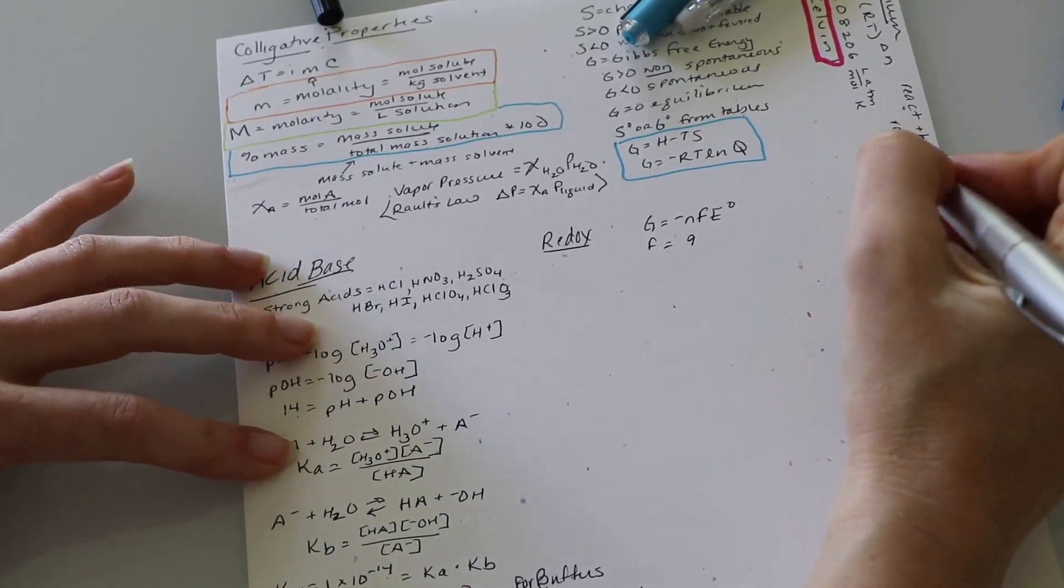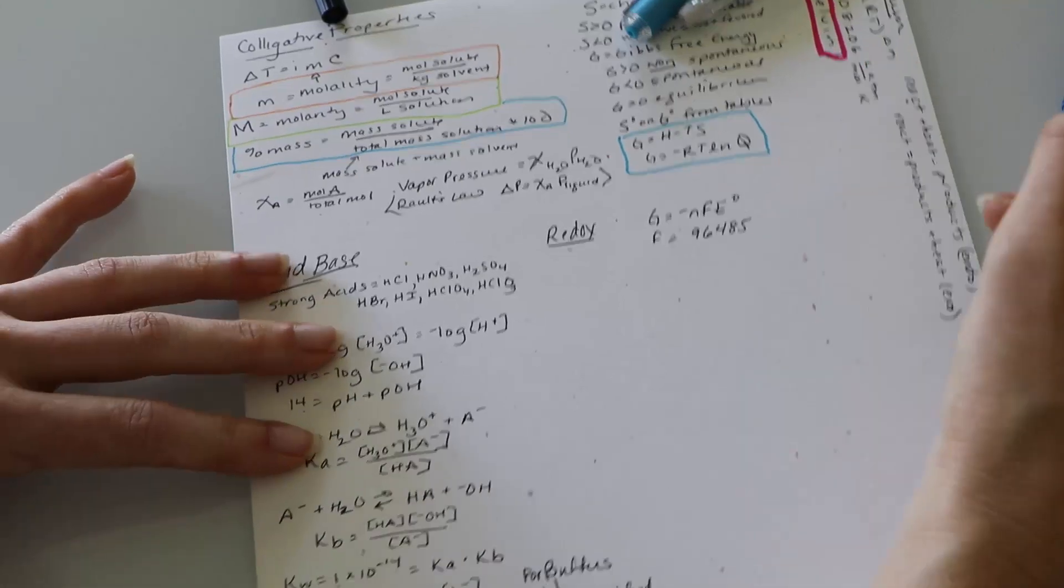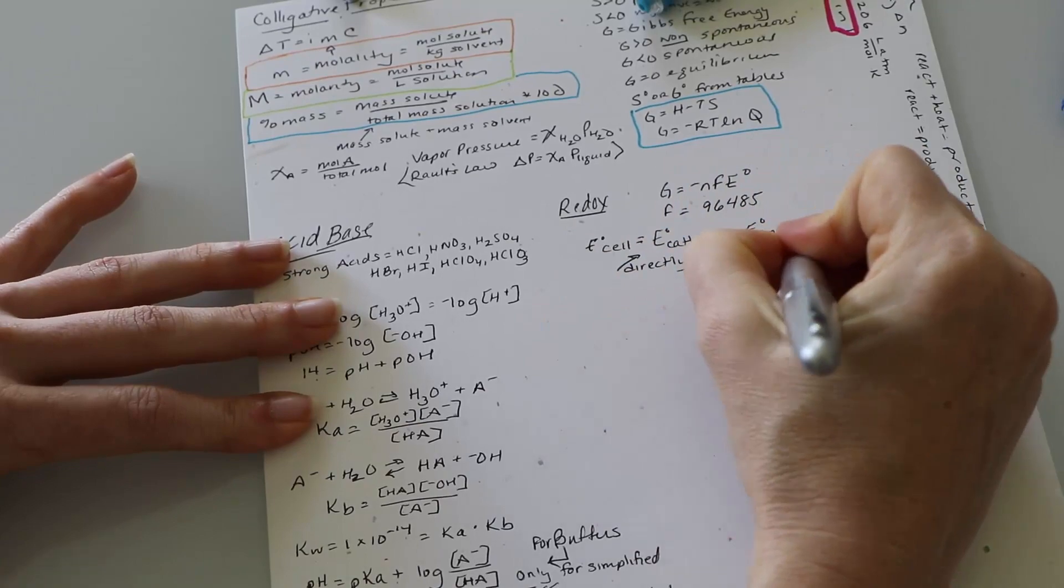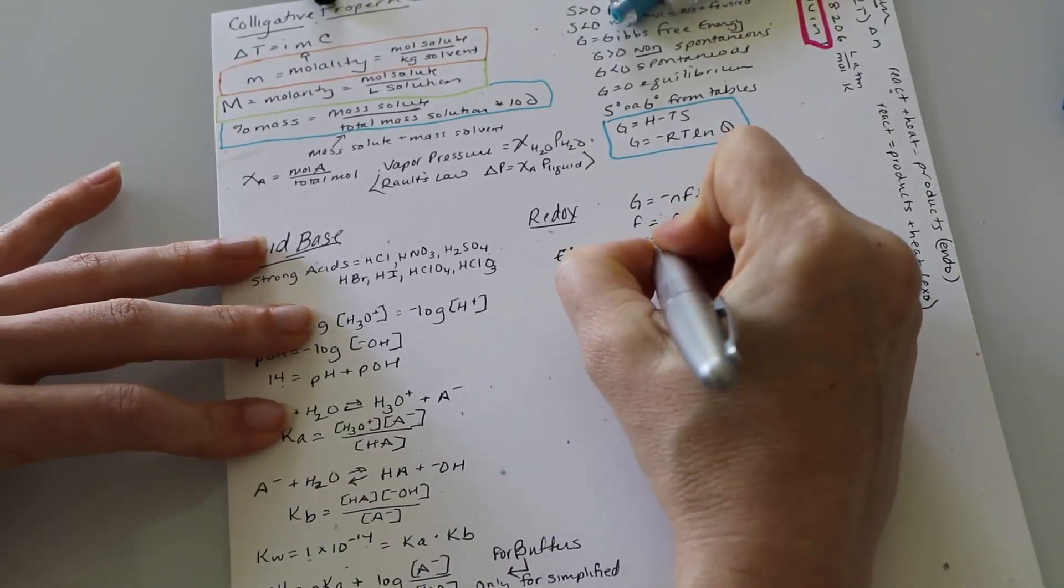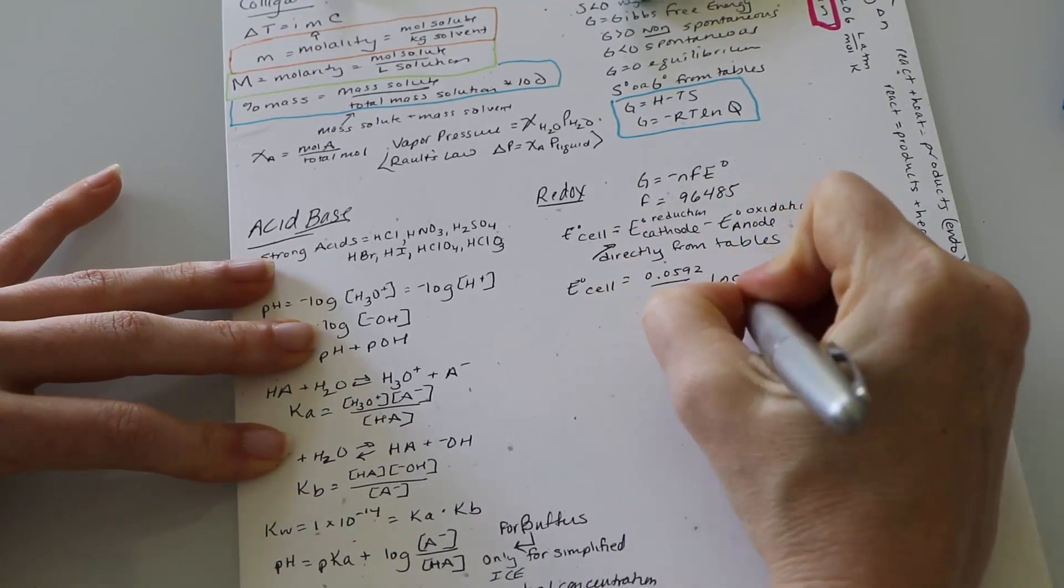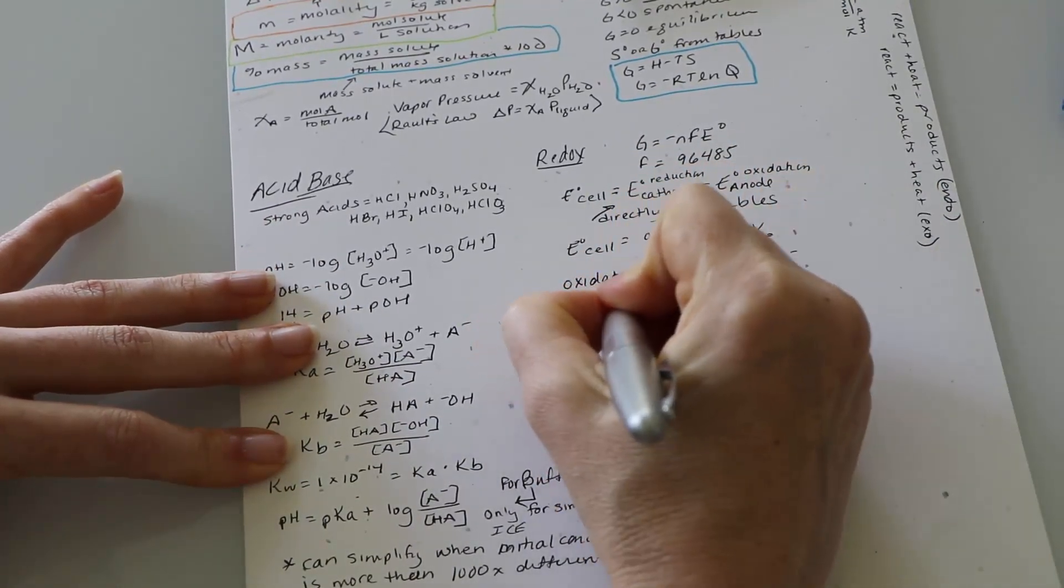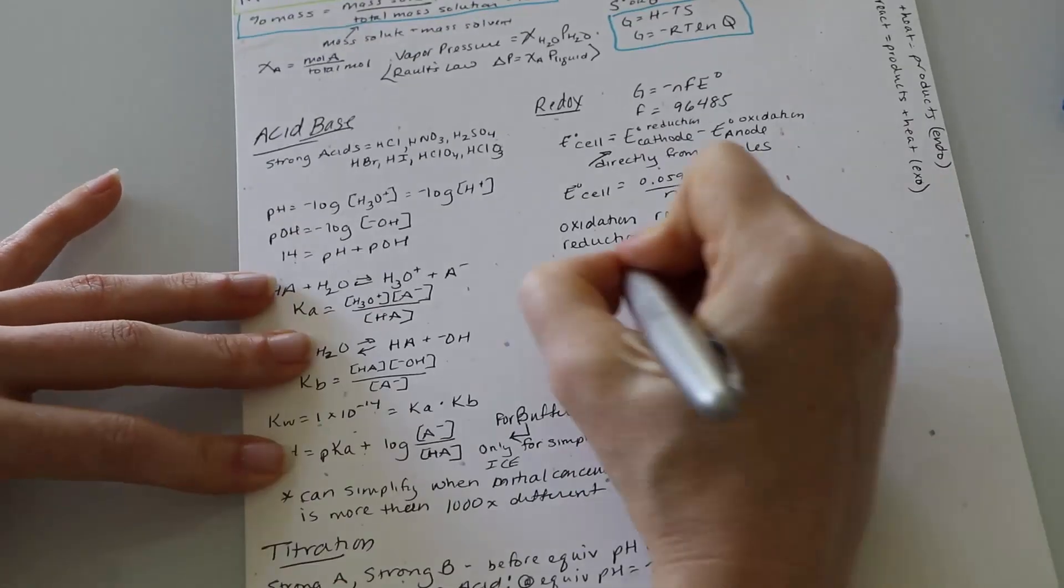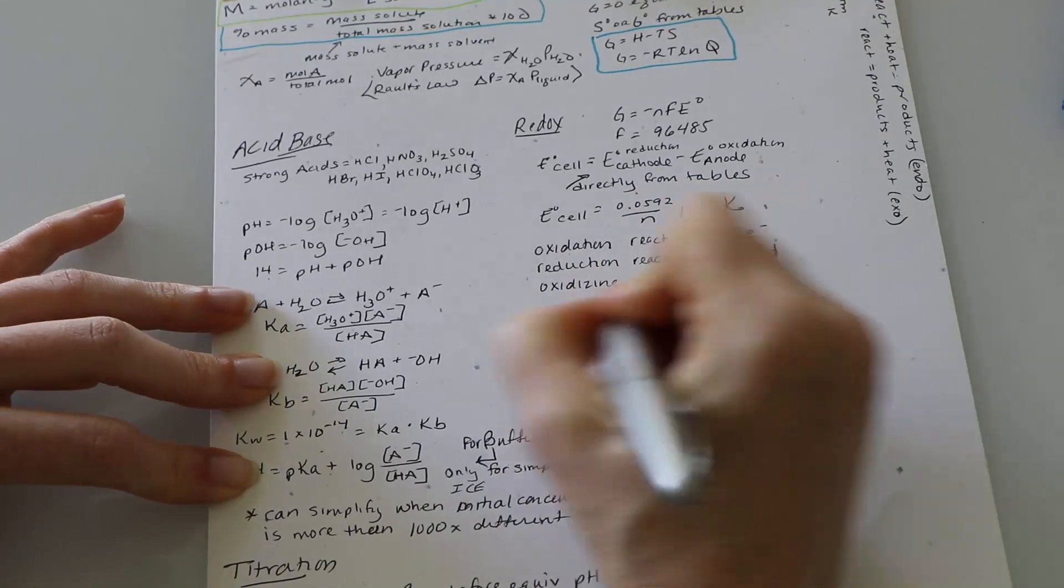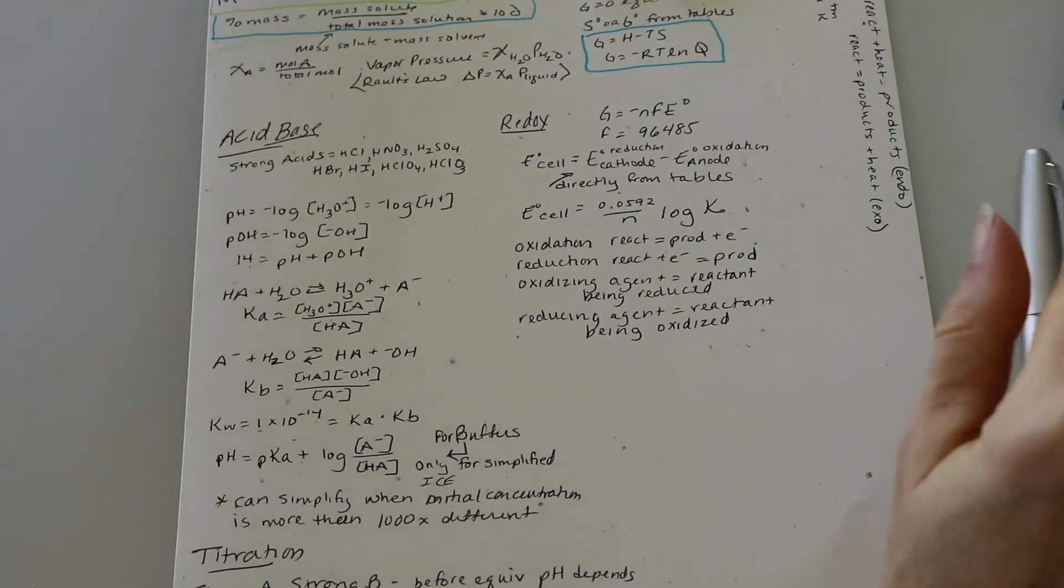So then we're going to move on to redox. So I put this here because I wanted it under entropy because G equals negative nFE naught. Now F is 96,485. It's one of those standard values that you need to remember. Then I have my E naught of my cell is going to be equal to the E of the cathode minus the E of the anode. There's reduction at the cathode oxidation at the anode. Those are directly from the tables.